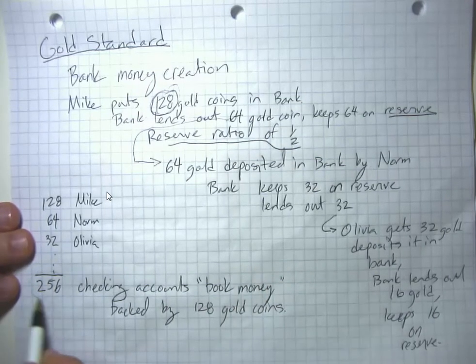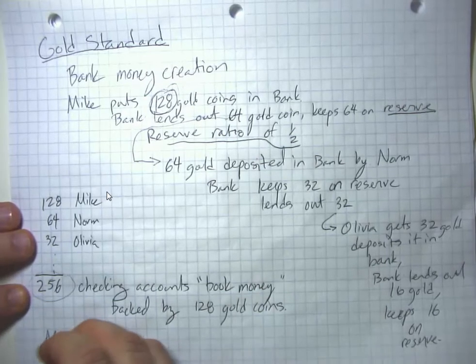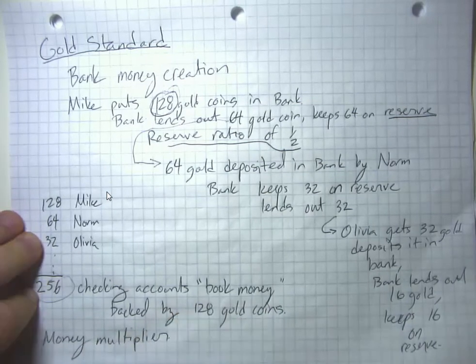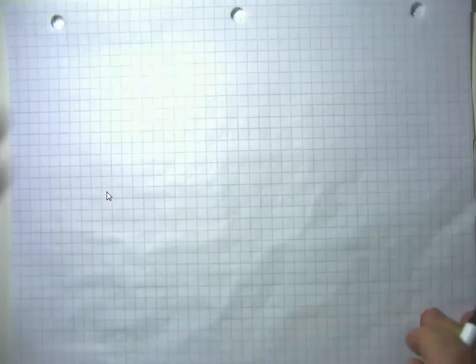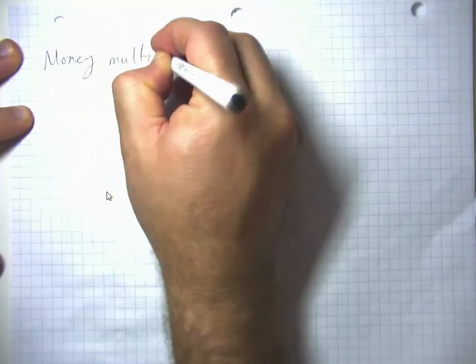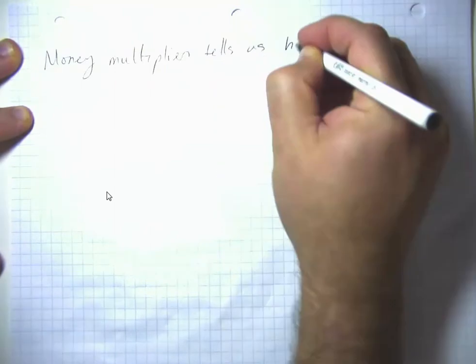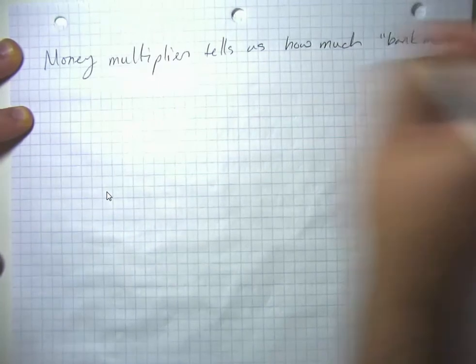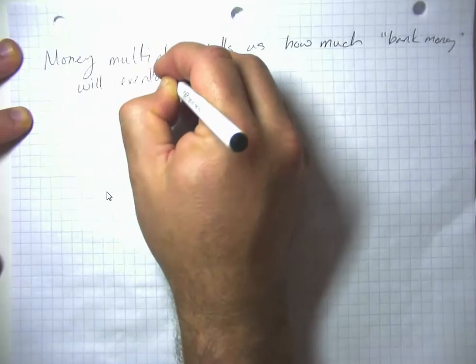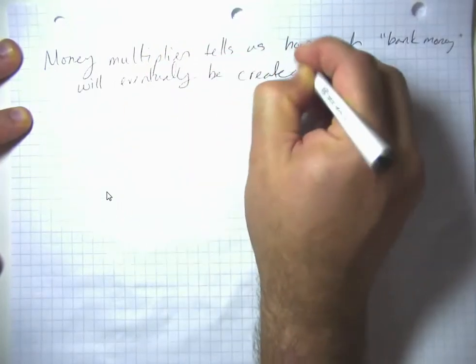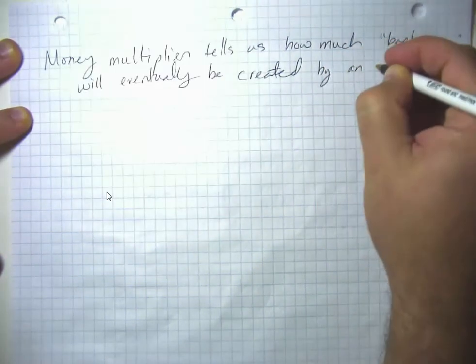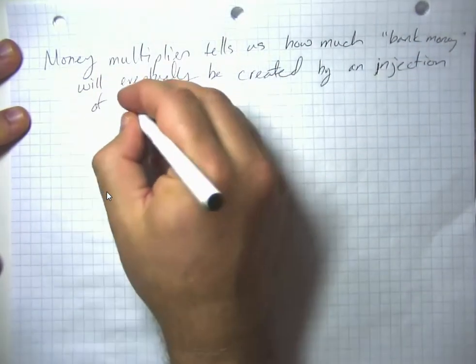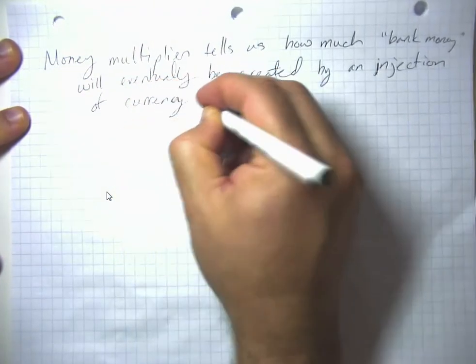This number right here came from what we call the money multiplier. The money multiplier tells us how much bank money will eventually be created by an injection of currency. So I injected 128 gold coins into the system, currency into the banking system.